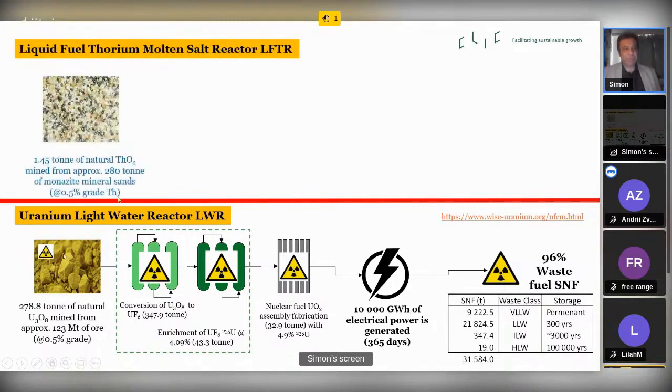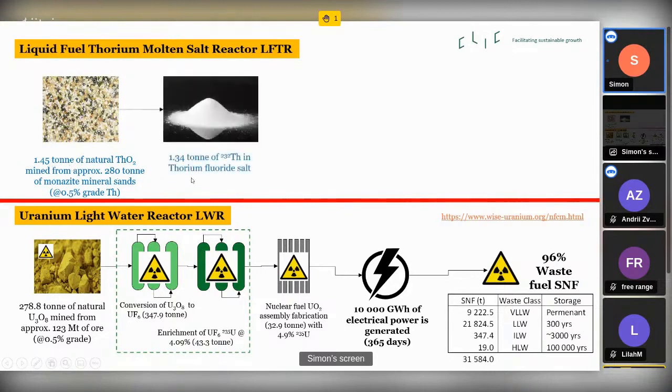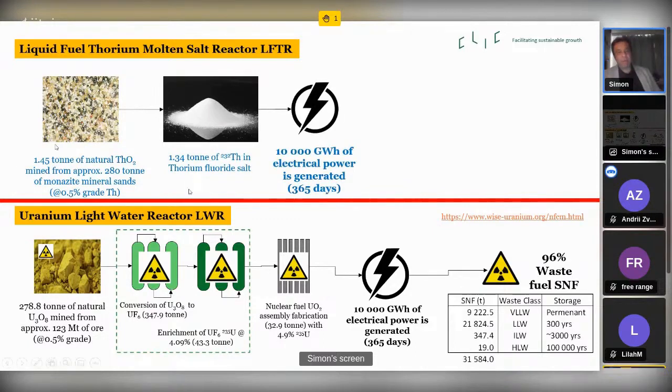Here's thorium. 280 tonnes of mineral sands to get 1.4 tonnes of natural thorium, which we convert straight to a thorium fluoride salt. There's various different versions of that. And we pour that in the reactor, and we have 10,000 gigawatt hours of electrical power. So we're doing the same thing.